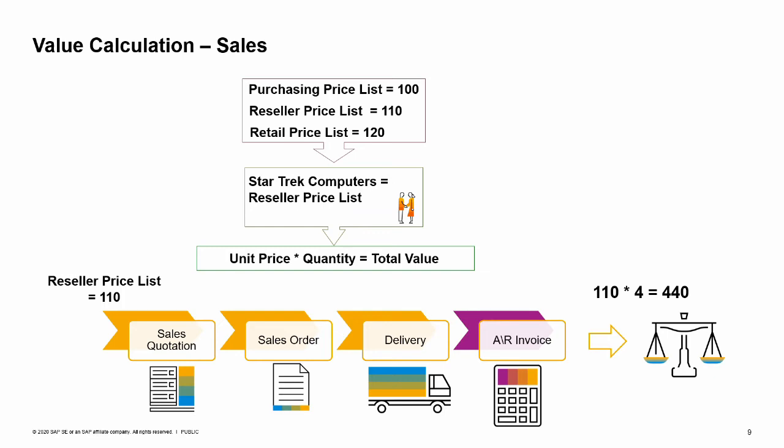The salesperson Jean enters a quantity of 4. The total value of the quotation is 440, assuming there are no additional items in the quotation, and that no discount, freight charges, or tax amounts are added. Star Trek Computers mails a sales order based on the sales quotation. In SAP Business One, Jean copies the sales quotation to a sales order. Two days later, Joe the warehouse manager dispatches the company truck with the weekly deliveries, including four portable media players for Star Trek Computers. Later on the day, the accountant copies the delivery to an AR invoice. Since no change was done to the price during the copy-to process, the invoice's total value is 440, and these are the credit and debit amounts in the automatic journal entry created by the AR invoice.